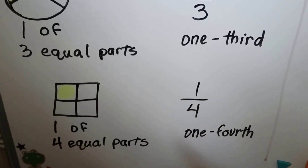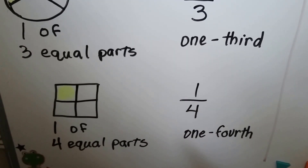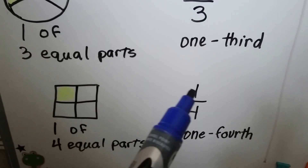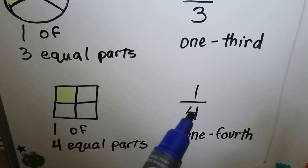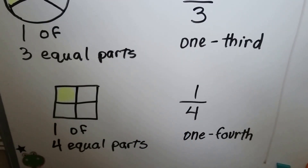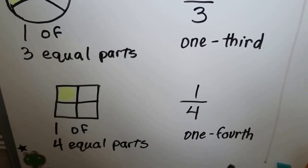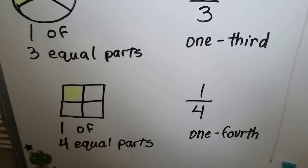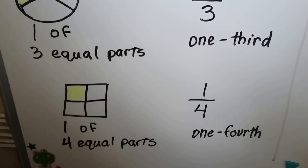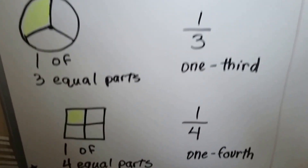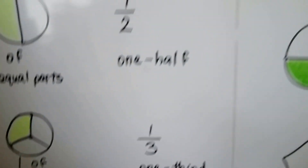Now look at this one — the square is cut into fourths. One of the four equal parts is yellow, so that's one fourth. The fraction has a top and a bottom.